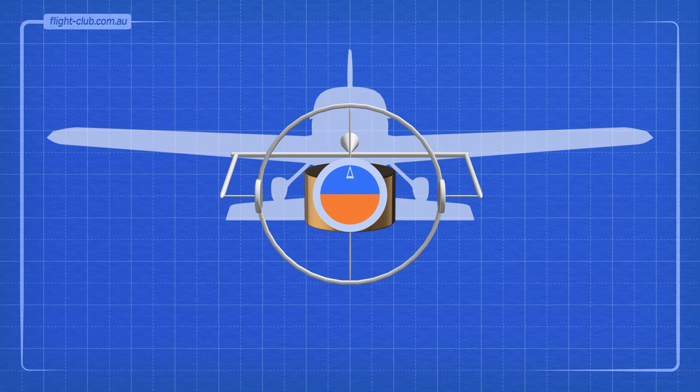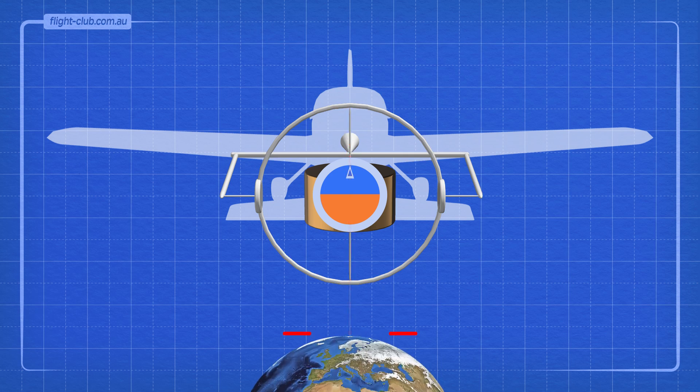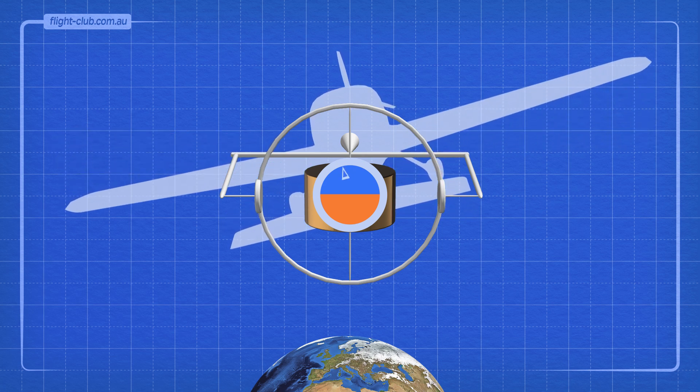This is achieved with a gyroscope attached to the gimbal. The rotor has a vertical axis and retains its alignment to the earth's surface. The attitude indicator shows the bank angle now, while the aeroplane rolls around it.